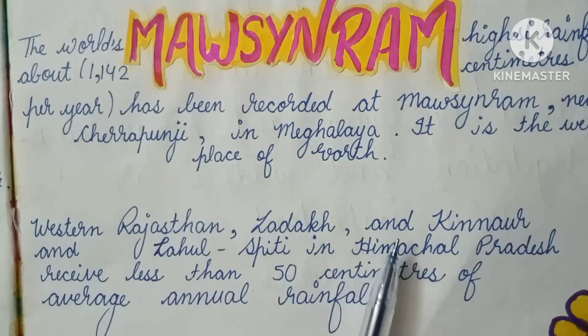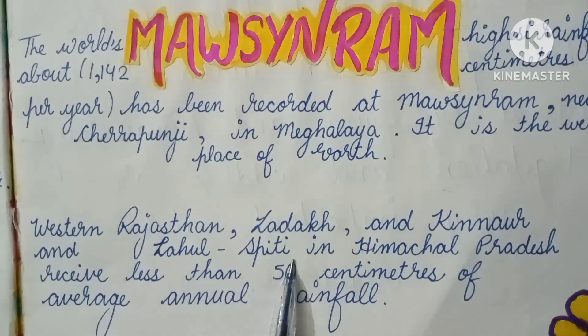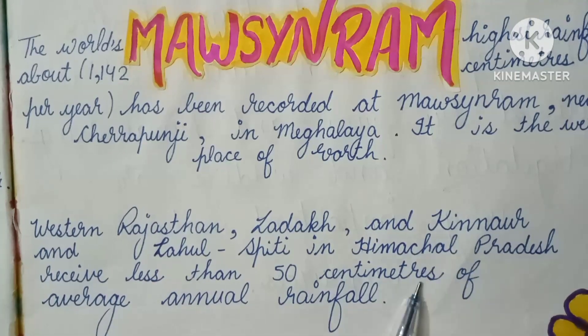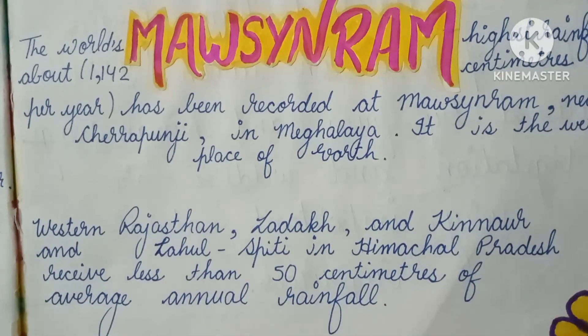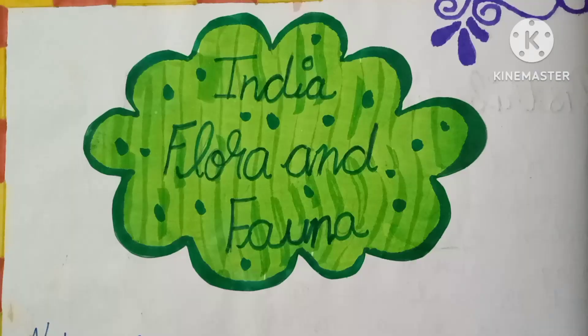Western Rajasthan, Ladakh, and Kinnaur and Lahaul-Spiti in Himachal Pradesh receive less than 50 cm of average annual rainfall.